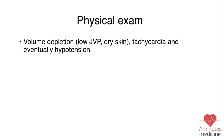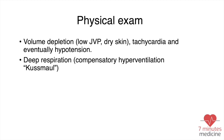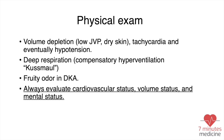For the physical exam, the most important finding is volume depletion, characterized by low JVP, dry skin, tachycardia, hypotension, and orthostatic hypotension. Deep respiration — compensatory hyperventilation — is seen in DKA. Always evaluate cardiovascular status, volume status, and mental status, as these are the three most important things to focus on when addressing DKA and HHS.